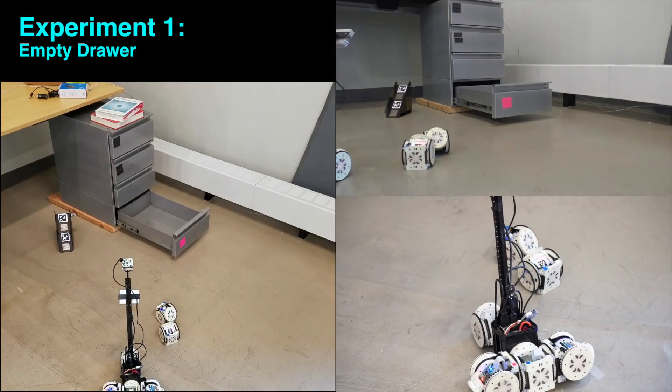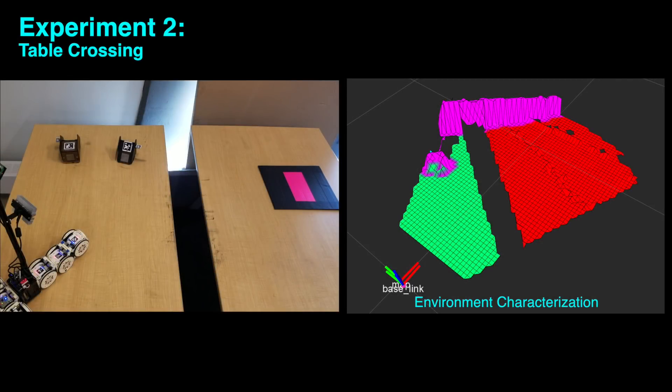In experiment two, the robot begins on the left table and is simply tasked with moving to the pink goal marker on the right table. The robot immediately recognizes that the goal marker is isolated from its own location by a 16-centimeter gap between the two tables.